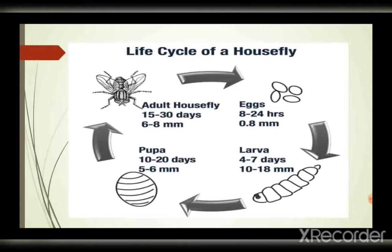A housefly undergoes four stages of development in its life cycle, and then the adult housefly. So these are the four stages. A housefly lays hundreds of eggs at a time.